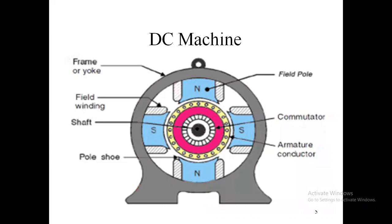DC machine braking is also covered, with three or four types of braking methods: regenerative braking, rheostatic braking, and plugging. Numericals on these braking methods are included as well. This covers all the major topics of the DC machine.